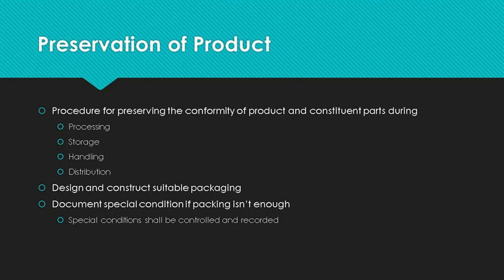Conformity of product does not end with final inspection and testing. All product and parts must be protected against damage during production, while in storage, while being moved, and during shipping. Your organization is responsible to design and construct suitable packaging — don't leave it to the shipping clerk to decide which box to use or how much stuffing to put around the product. If the product needs special conditions such as anti-static barriers or temperature controls, your organization must document how conditions will be controlled and record that those controls were implemented.